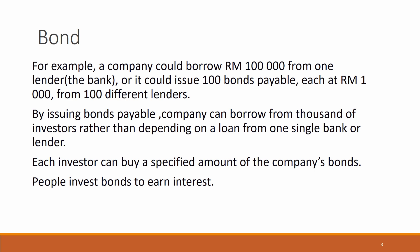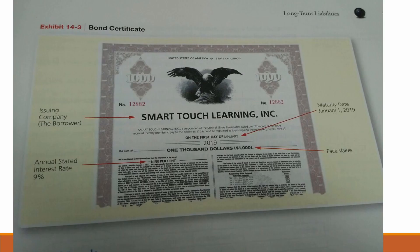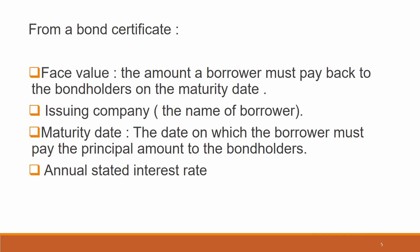People invest in bonds to earn interest. This is an example of a bond certificate, and you can see from the certificate the issuing company or the name of the borrower, the annual stated interest rate, the maturity date, and face value. Face value is the amount a borrower must pay back to the bondholders on the maturity date — the date on which the borrower must pay the principal amount to the bondholders — and the annual stated interest rate.